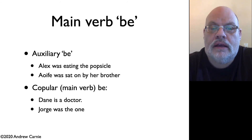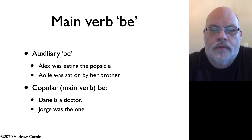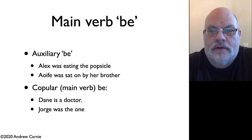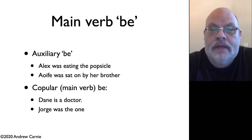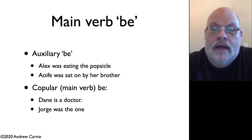There's the meaning where be functions as an auxiliary to mark aspect or voice, and the meaning where it connects two things together. So we're going to treat these three different categories of be, have, and do as main verbs, and restrict the use of be, have, and do as auxiliaries to those cases where they express aspect or voice.